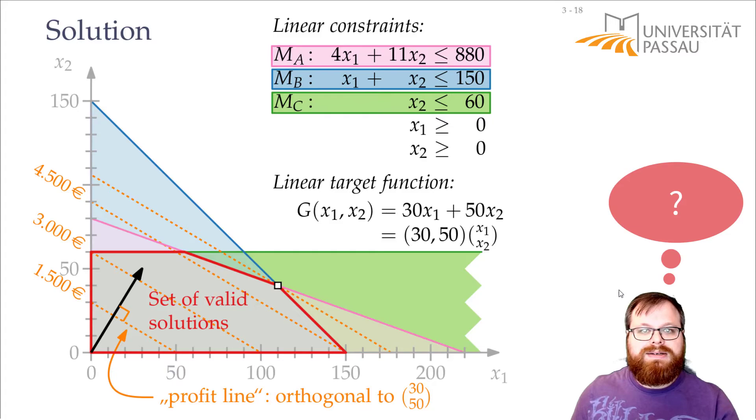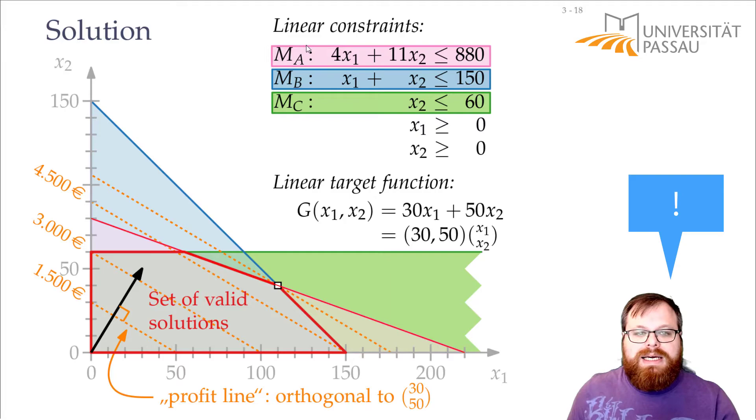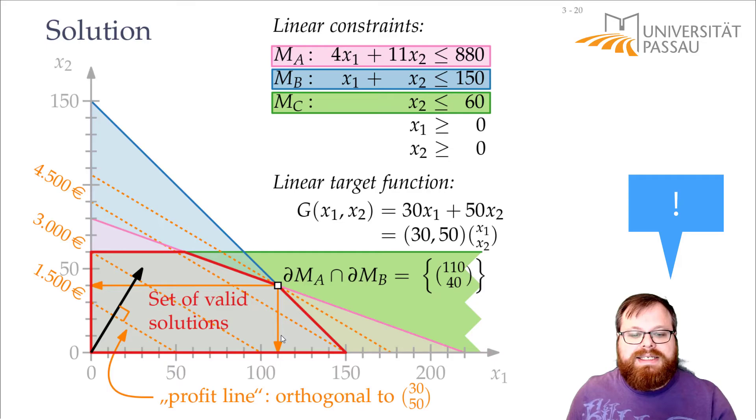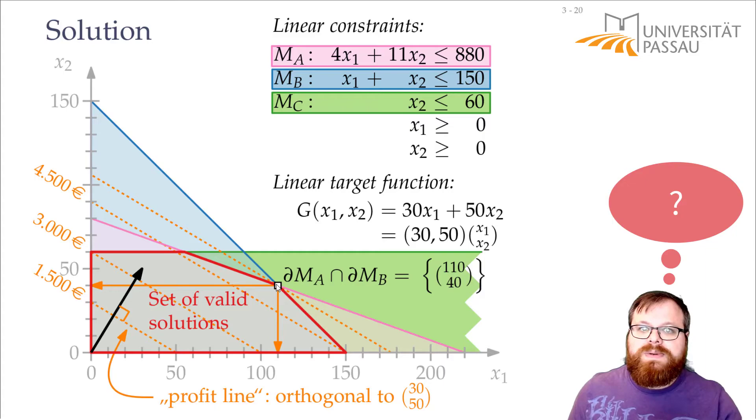And this gives us the maximum profit. And now can you compute the coordinate of this point? Well, it lies on the boundary of the pink half plane, which corresponds to this, and on the boundary of the blue half plane, which corresponds to this constraint. So it has to lie in the intersection of the two lines that we get by these inequalities if you put an equals here. So x1 plus x2 equals 150, and 4x1 plus 11x2 equals 880. And I already did that for you. So that's at 110 x1 and 40 x2.